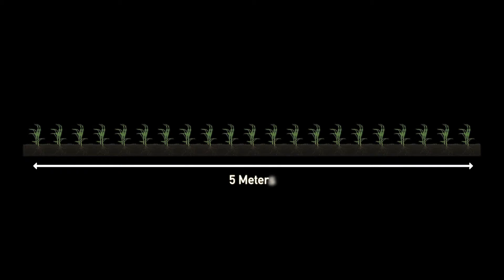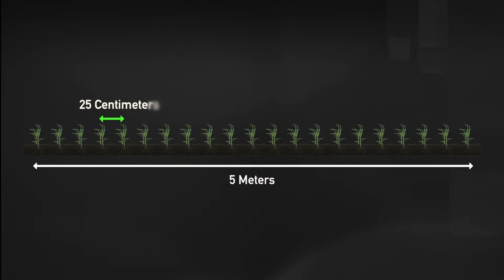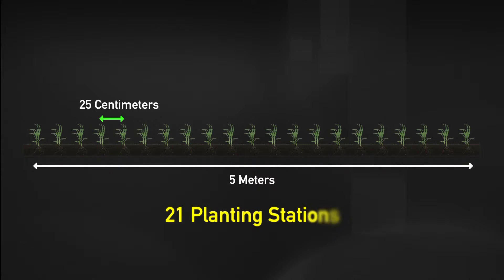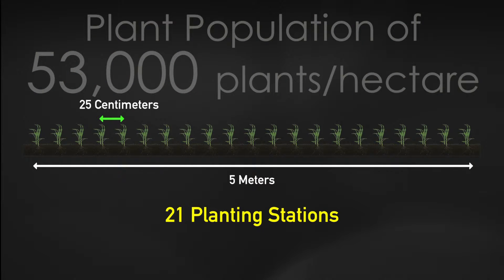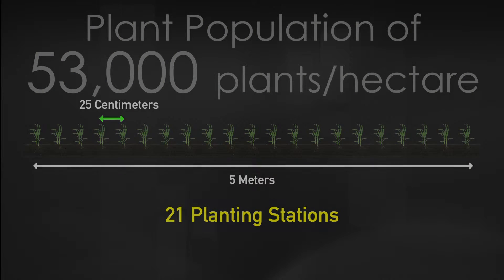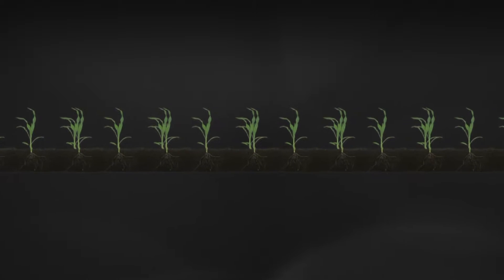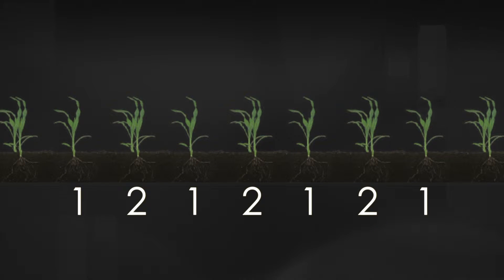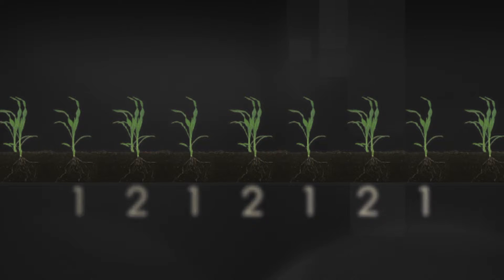Poor stands will also contribute to field variation through uneven depletion of the screening block. A standard maize trial row in eastern and southern Africa is 5 meters long with 25 centimeters between planting stations and 75 centimeters between rows. A single row therefore has 21 planting stations, and it is recommended that 42 seeds be packed for each experimental row. Where sufficient seed is not available, it is strongly recommended that at least two seeds are planted at every alternate planting station.